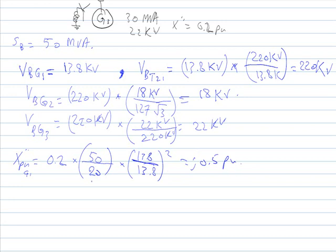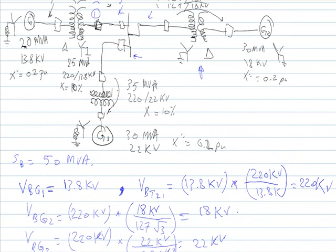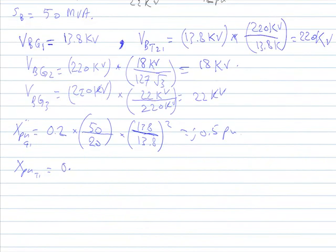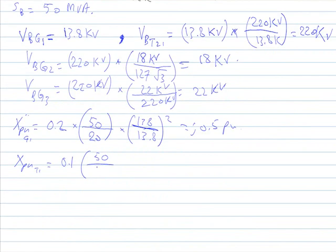The per-unit value of transformer one: the old per-unit value is 10%, which is 0.1. Multiplied by the new MVA of 50 over the old MVA of 25, then multiplied by the square of the primary voltage base ratio — 13.8 kV old over 13.8 kV new. This gives j0.2 per unit.